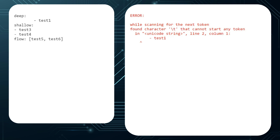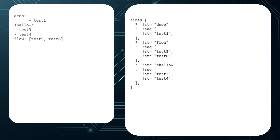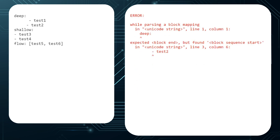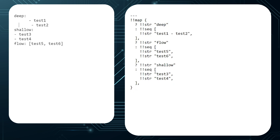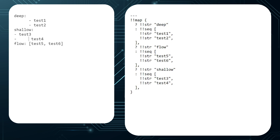Number 10: Tabs cannot be used for indentation — they must be converted to spaces. I always thought the number of spaces was fixed, but the number of spaces is not important as long as parallel elements have the same left justification and hierarchically nested elements are indented further. The indentation level of a block scalar is detected from the first non-empty line.